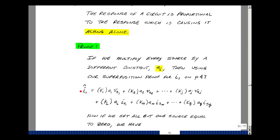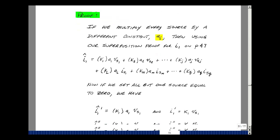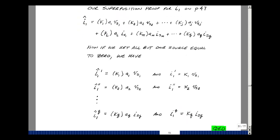I'll call it I1 hat, and now this is the combination with my sources. If we set all but one source equal to zero, we can find the response due to each source, and we're calling that prime, double prime, and so on.